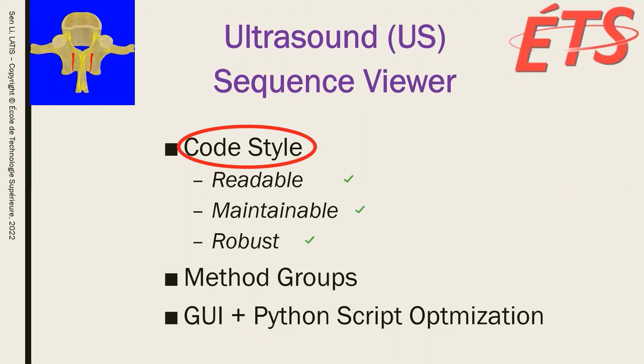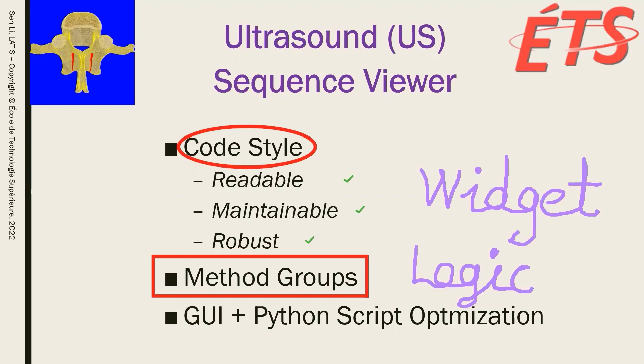Then we will build a framework to group different methods in a class. We know that there are only two classes in a Python file we need to focus on, the widget class, and the logic class. But there can be a lot of methods in each class. A good arrangement of methods in a Python script can simplify both code reading and programming.